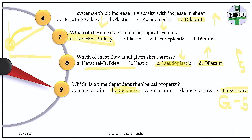For example, toothpaste — initially it is a gel; when you apply shear stress, it will flow. That is thixotropy. For a certain time it remains fluid, then it will again retain its gel-like state. In rheopexy it is the opposite — initially it is a sol, then it becomes gel-like or solidifies, but again for a particular time, then it regains its sol-like property.